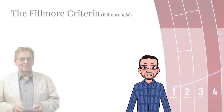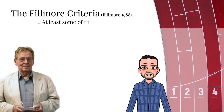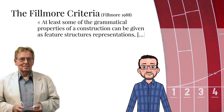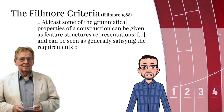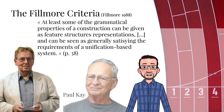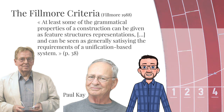We now arrive at the fourth criterion. Fillmore wrote: At least some of the grammatical properties of a construction can be given as feature structure representations, and can be seen as generally satisfying the requirements of a unification-based system. What is important about this criterion is that Fillmore wanted construction grammar to be formally precise, and particularly Paul Kay has been instrumental in developing the formal architecture of the original construction grammar. Unfortunately, there is a widespread misconception in cognitive linguistics that it is impossible to be formally precise when analyzing languages, and some even think that a formalism is harmful for linguistics. That is wrong.